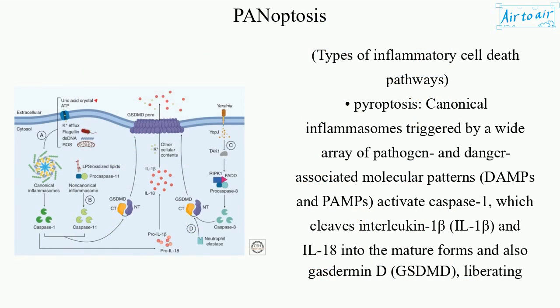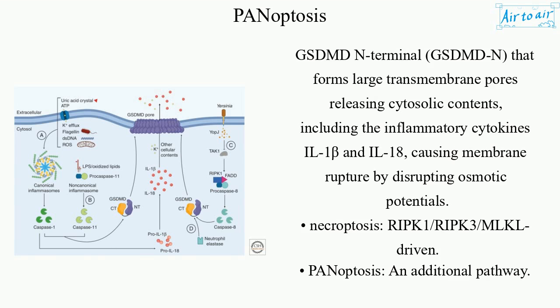Types of inflammatory cell death pathways. Pyroptosis: canonical inflammasomes triggered by a wide array of DAMPs and PAMPs activate CASPASE-1, which cleaves interleukin-1-β (IL-1β) and IL-18 into their mature forms, and also gasdermin-D (GSDMD), liberating the GSDMD N-terminal (GSDMD-N) that forms large transmembrane pores releasing cytosolic contents, including the inflammatory cytokines IL-1β and IL-18, causing membrane rupture by disrupting osmotic potentials.